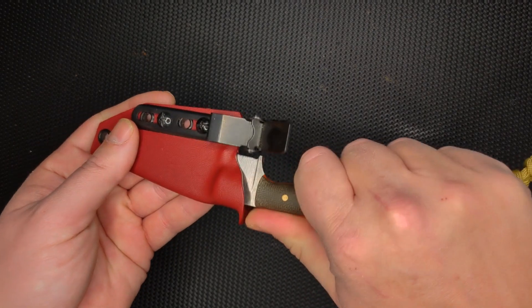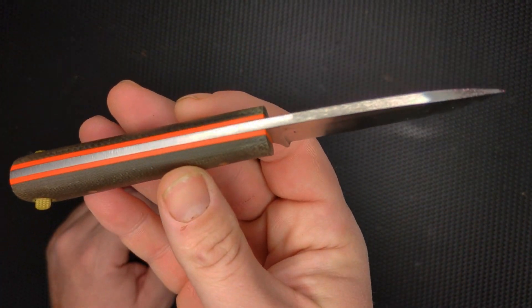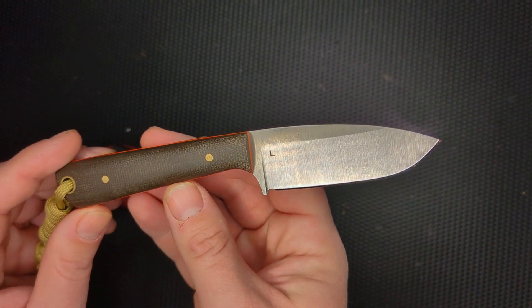LT Wright, but it's a DLT exclusive, and they did it with these orange liners. It's a really small AEBL knife.